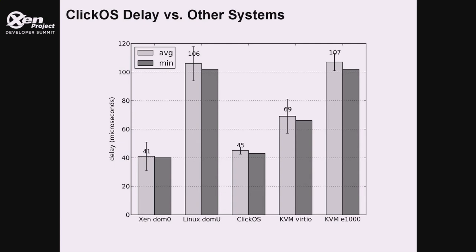Next, we measured delay compared to other existing approaches. We used a simple ICMP responder Click configuration in ClickOS, with all VMs idle to get the baseline reading, and an external box pinging to measure RTT. ClickOS almost matches the delay of DOM0, and we decrease delay by half compared to a standard DOMU, while also performing better than KVM.